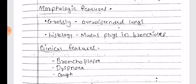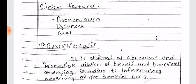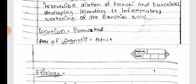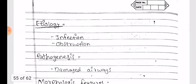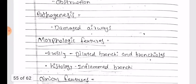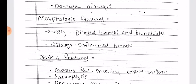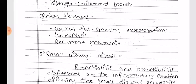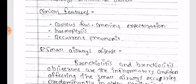Note: these are short revision points — you need to elaborate a little on these individual topics. Clinical features of bronchial asthma: bronchospasm, dyspnea, and cough. Bronchiectasis is defined as abnormal and irreversible dilatation of bronchi and bronchioles developing secondary to inflammatory weakening of the bronchial walls. Location: bronchus. Age of diagnosis: adults. Etiology: infections and obstructions. Pathogenesis: damaged airways. Morphologic features: grossly dilated bronchi and bronchioles; histologically, inflamed bronchi. Clinical features: copious foul-smelling expectoration, hemoptysis, and recurrent pneumonia.